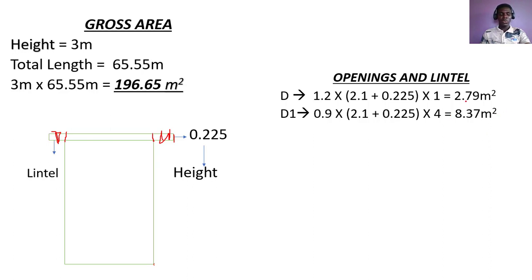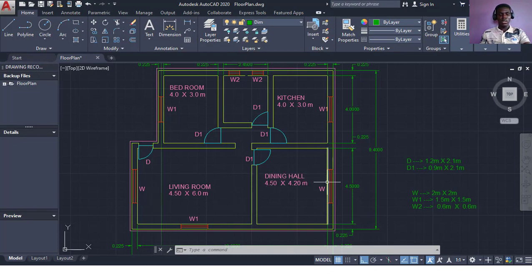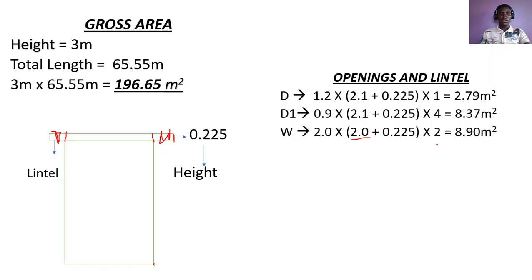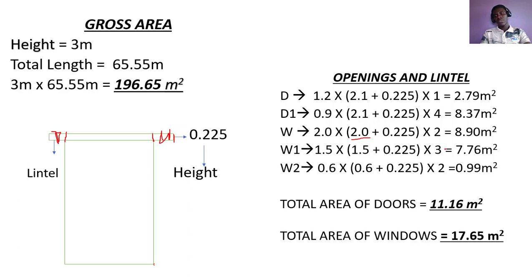Every window also has a lintel on top. Let's say window W has a height of 2.0 m. We add 0.225 to get the extended height and we have two W windows, so we multiply by two — giving 8.19 square meters. We follow the same procedure for window W1. Summing all doors gives a total area of 11.16 square meters, and the total area of windows is 17.65 square meters.